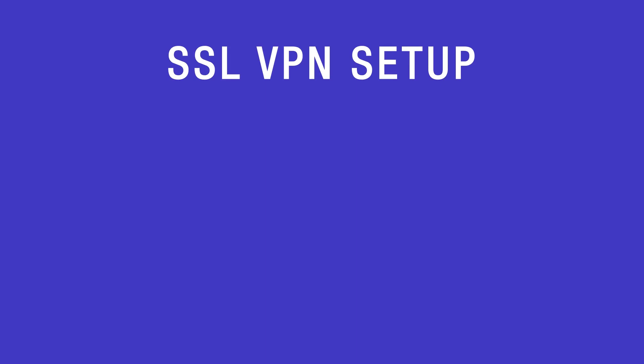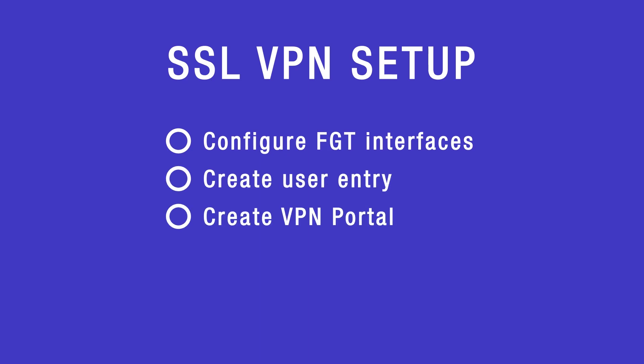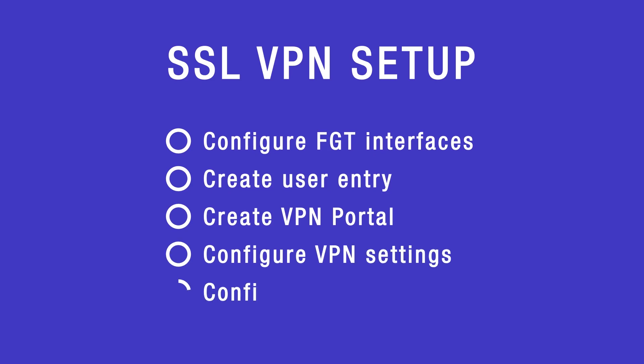The FortiGate setup follows the same steps for both the web and the tunnel mode with only minor differences. We are going to configure the interface and the firewall address, then create a user entry for the remote user and VPN portal. After that we will configure VPN settings and create a firewall policy.